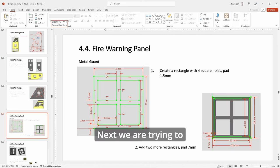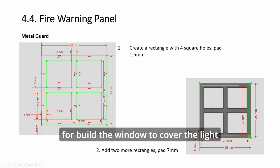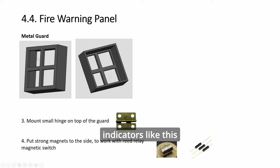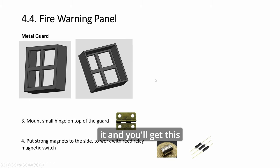Next, we are trying to build the window to cover the light indicators. Like this. Just this shape first, and then a smaller one and pad it, and you'll get this.